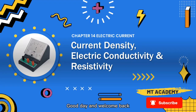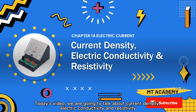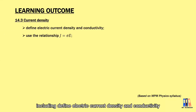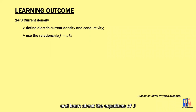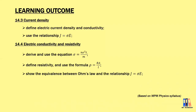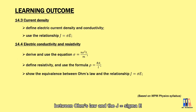Good day and welcome back. Today's video we're going to talk about current density, electric conductivity and resistivity. The learning outcomes of today's video include: define electric current and conductivity, learn about the equation J equal to sigma E, derive the equations for the conductivity, define resistivity, and prove the equivalence between Ohm's law and J equal to sigma E.